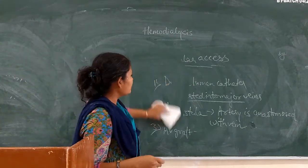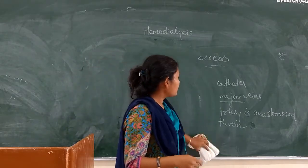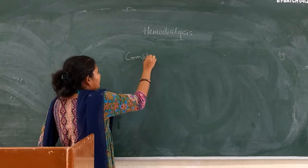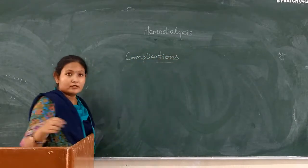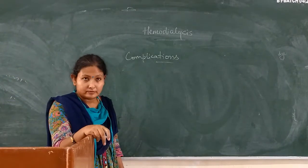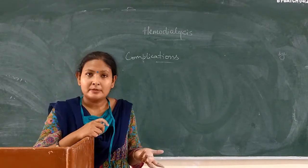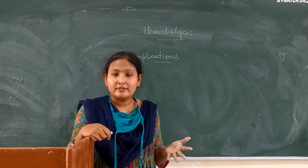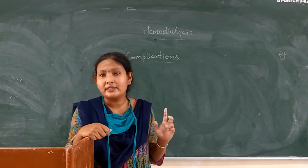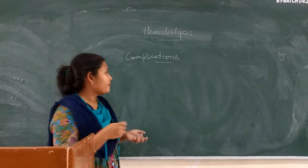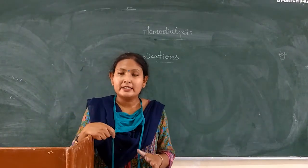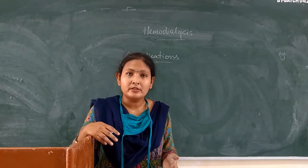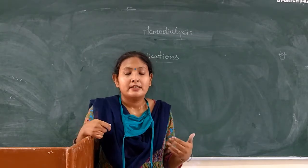Now let us see the complications of dialysis treatment. The first complication is anemia, which can occur due to blood loss during the procedure and also because in chronic renal failure, erythropoietin production is reduced. The second complication is heart failure, because of fluid overload. If dialysis is done intermittently — for example, three to four times a week — fluid can keep accumulating between sessions, and over a long time this can lead to heart failure.